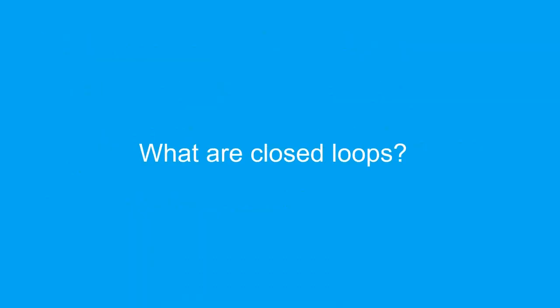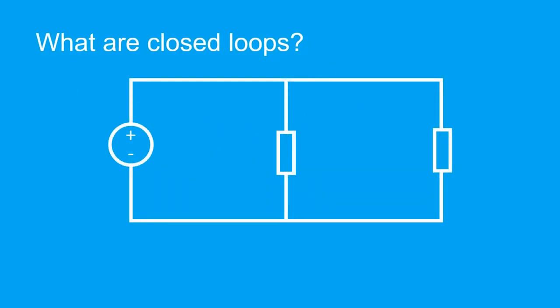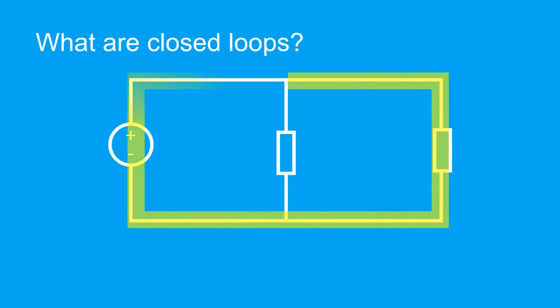Getting back to KVL, we notice there's this term closed loops. What does that mean? It literally means wires making closed shapes. So for example, in this circuit, this is a closed loop, this is a closed loop, and this is a closed loop.